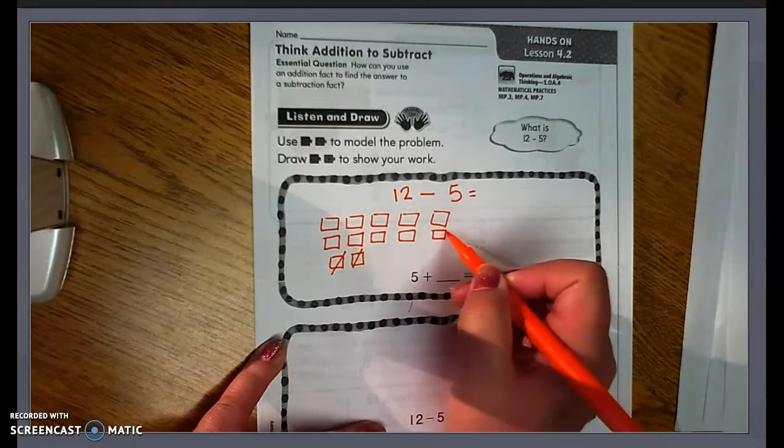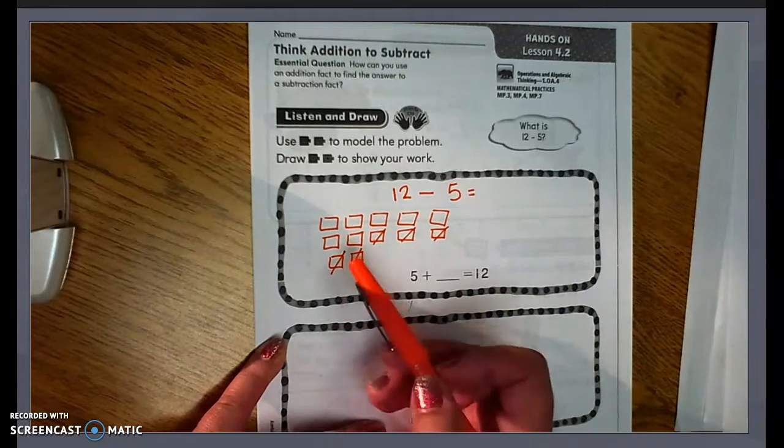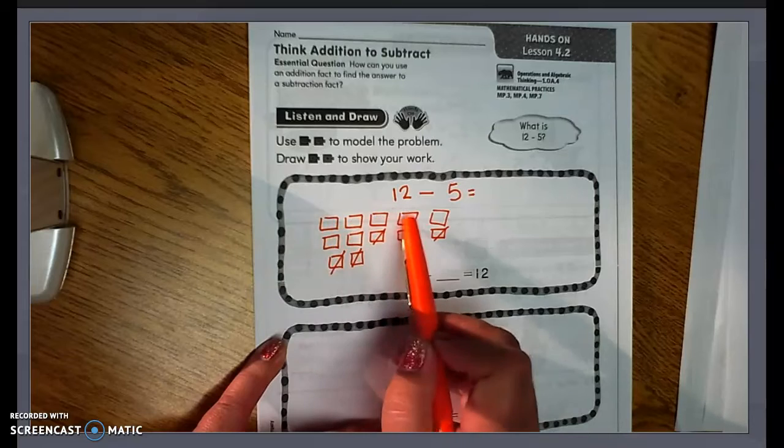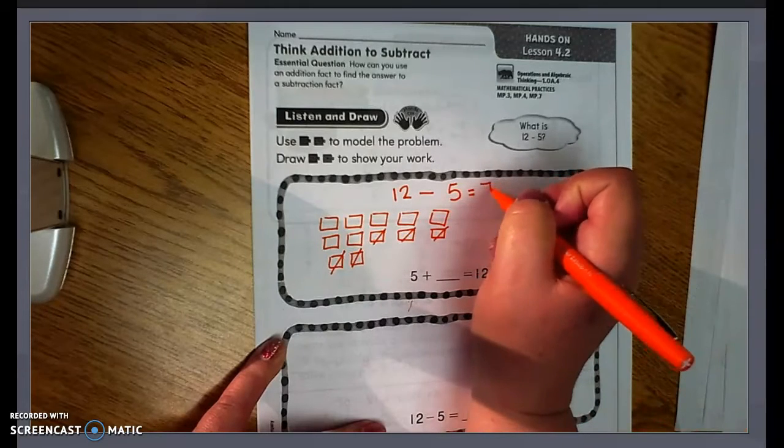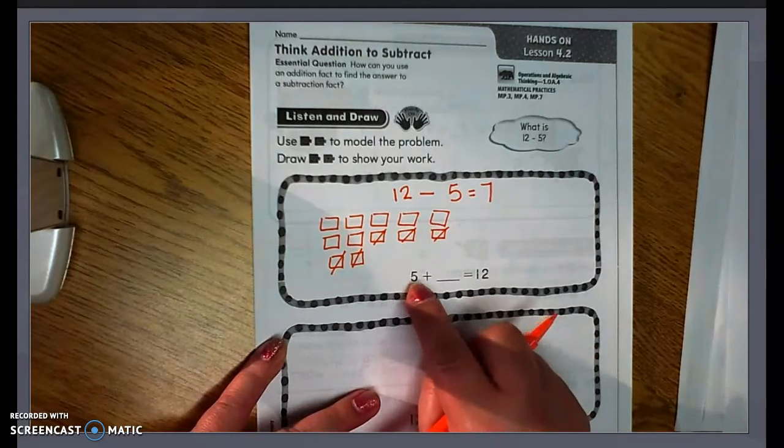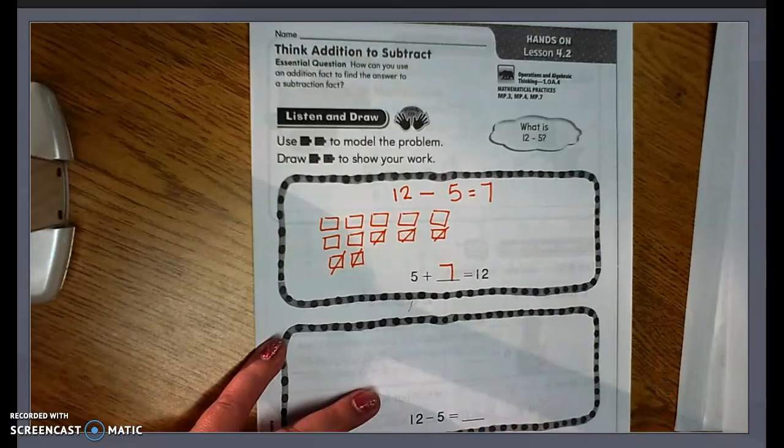So then we're going to minus the 5. So we have 1, 2, 3, 4, 5. And then how many do we have left? We have 1, 2, 3, 4, 5, 6, 7. So 12 minus 5 equals 7. So that means that 5 plus 7 equals 12.